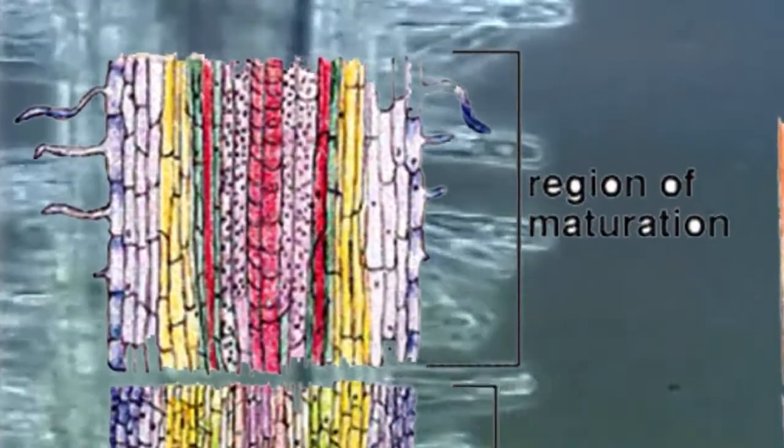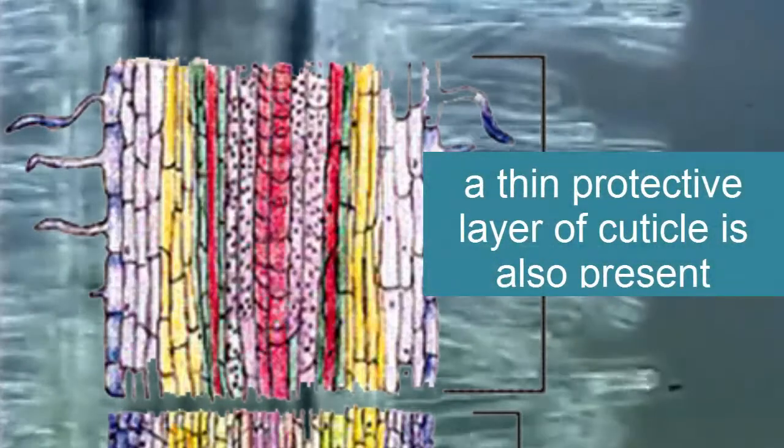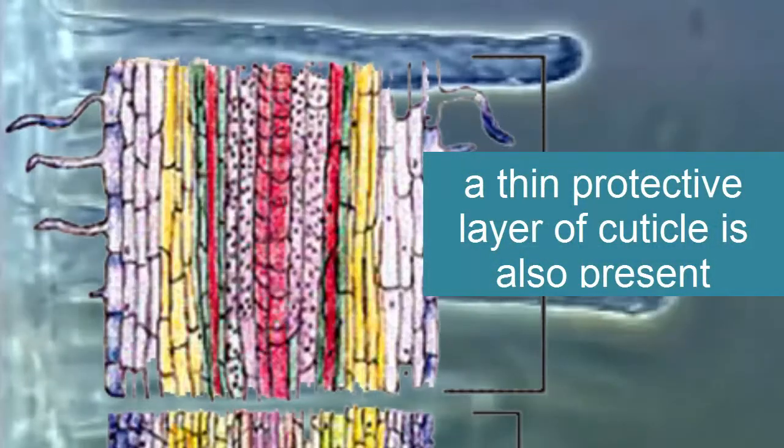Root hairs are extensions of their cell membranes. These structures increase the surface area for absorption. A thin cuticle may also be present to protect the roots from pathogens.